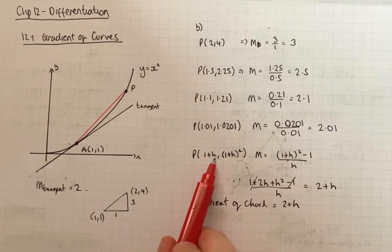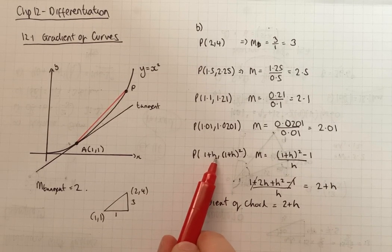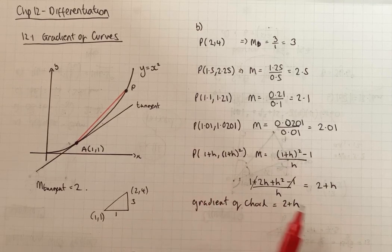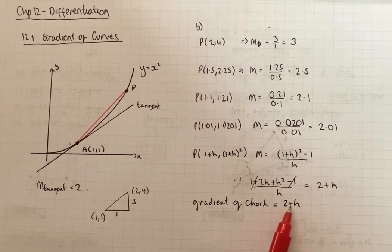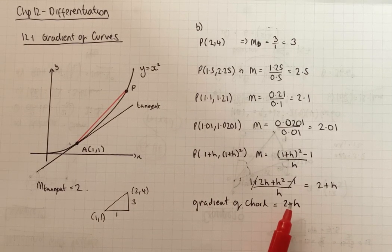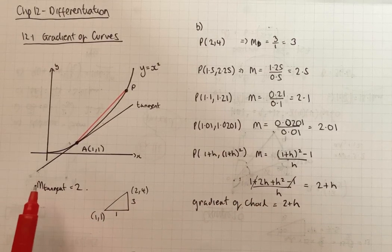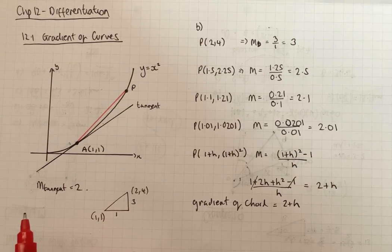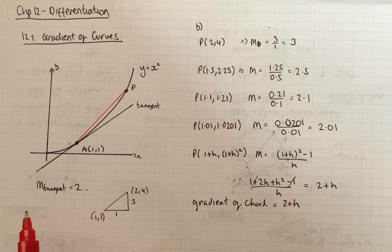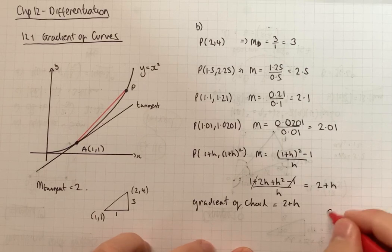So when you make H significantly small, close to 0, we say tends to 0, the gradient of the chord tends to 2. So the gradient of the chord becomes the gradient of the tangent as the chord becomes the tangent. Okay, if you could have a go there at Exercise 12i.